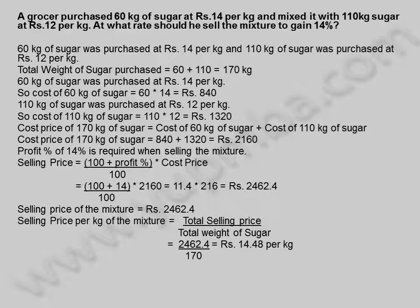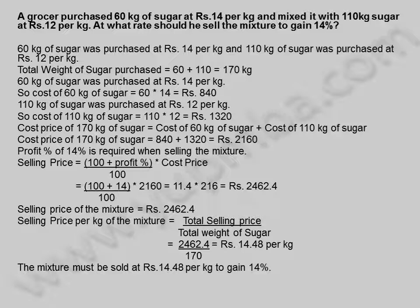Selling price per kilogram of the mixture is equal to total selling price divided by total weight of sugar, which equals 2,462.4 divided by 170, which equals 14.48 rupees per kilogram. The mixture must be sold at 14.48 rupees per kilogram to gain 14 percent.